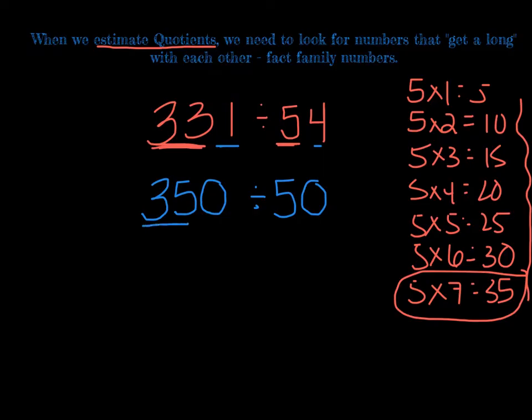Alright? 35 divided by 5 is 7. And then to make this even easier on ourselves, we have a zero on this side and a zero on this side of the problem. And when that happens, you can just cross those out. So really, in a sense, our problem just became 35 divided by 5, which is 7. So we made this super complicated problem up here, 331 divided by 54. By finding fact family numbers and estimating, we found that it should be about 7.